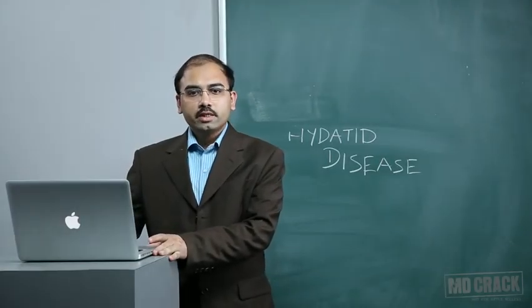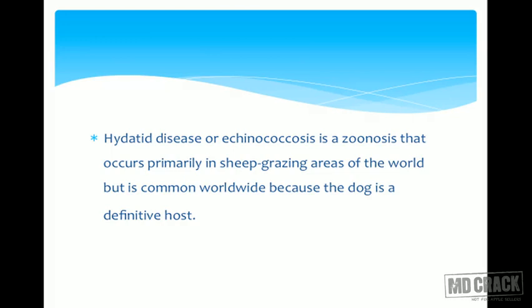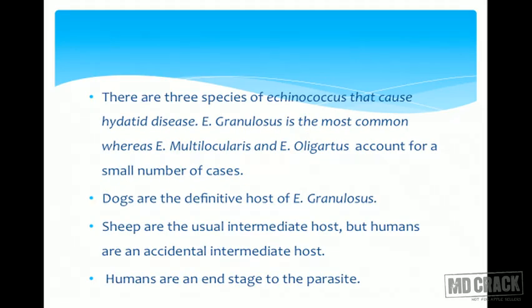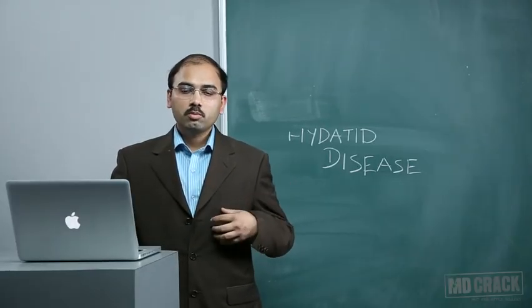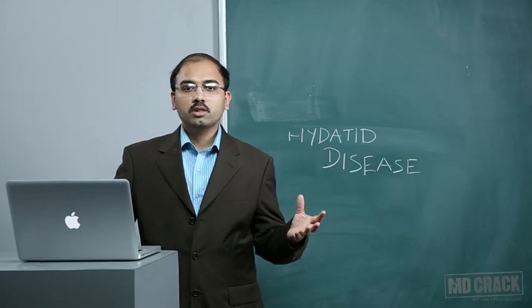Hydatid disease of the liver, or Echinococcosis, is a zoonosis acquired from animals that occurs primarily in sheep-grazing areas but is common worldwide because the dog is a definitive host. There are three species of Echinococcus: Echinococcus granulosus is the most common, while E. multilocularis and E. vogeli account for a small number of cases. Dogs are the definitive host of E. granulosus; sheep are the usual intermediate host, but humans are accidental intermediate hosts and are end-stage to the parasite, meaning the infection is not transmitted further to any other animal or human.